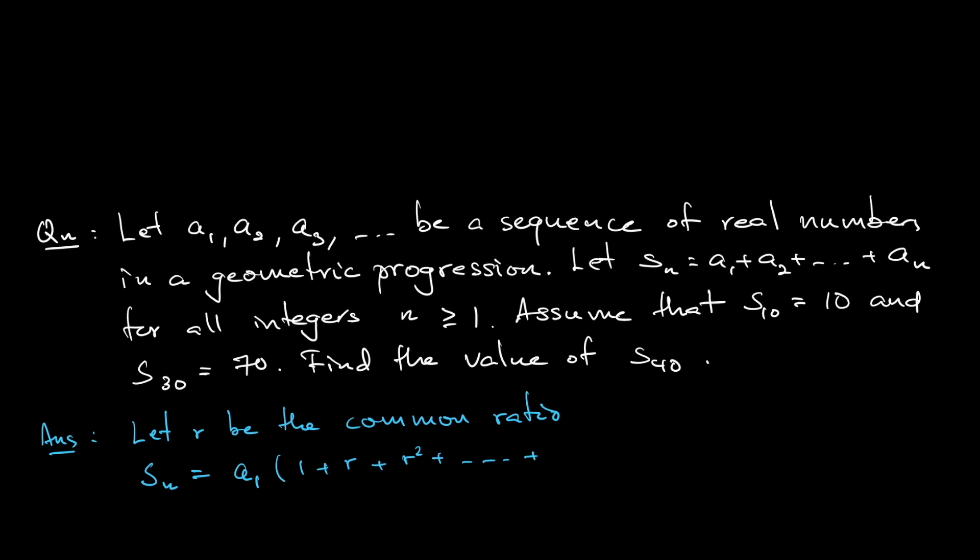Notice that an equals a1 multiplied by r to the power of n minus 1. So if you take a1 as a factor, that means r to the power of n minus 1 is left.